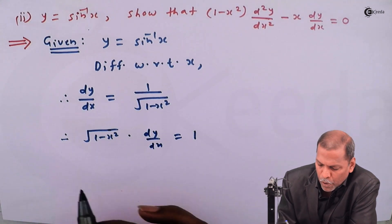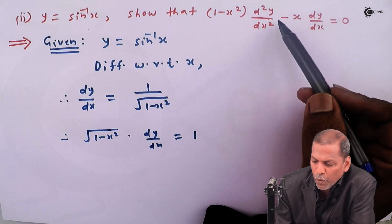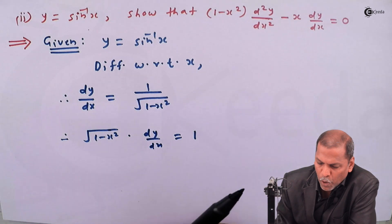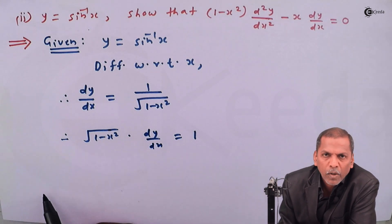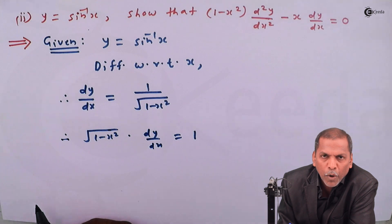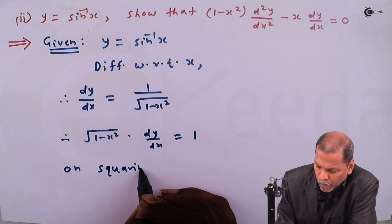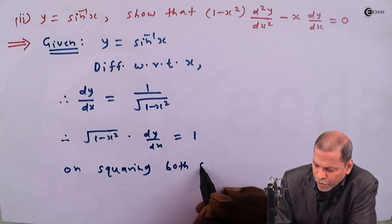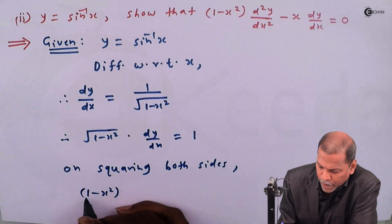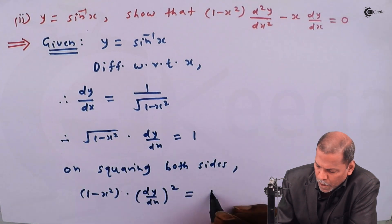Now if you observe the question, we have to show that 1 minus x squared into d²y/dx² minus x into dy/dx is equal to 0. There is no square root sign in the question, so to remove the square root sign we have to square both sides. On squaring both sides of the above equation, we get 1 minus x squared into (dy/dx)² is equal to 1.